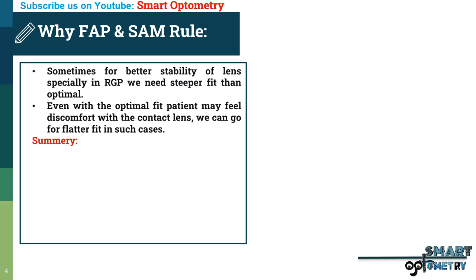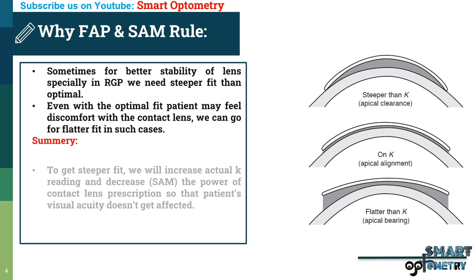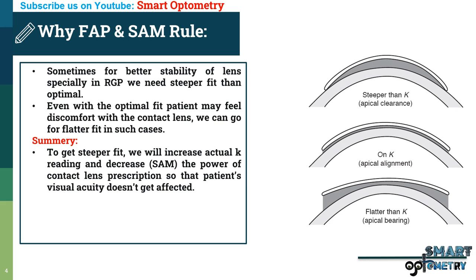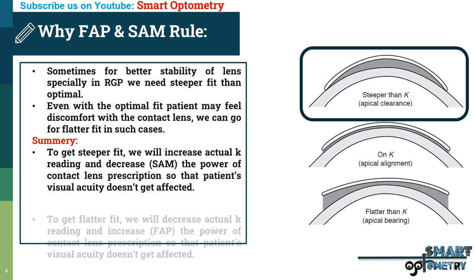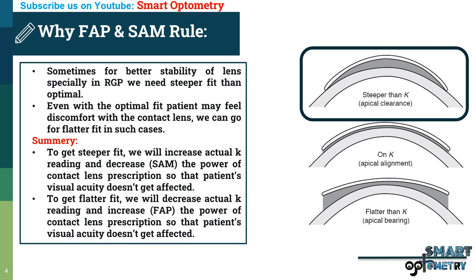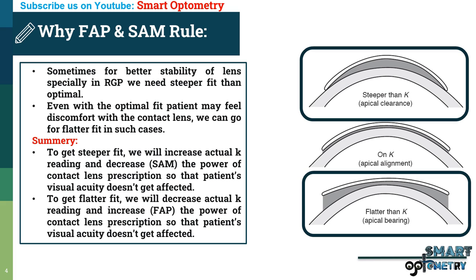The overall summary is: to get a steeper fit, we will increase the base curve reading and decrease the power of the contact lens prescription so that the patient's visual acuity doesn't get affected. And to get a flatter fit, we will decrease the base curve reading and increase the power of the contact lens prescription so that the patient's visual acuity doesn't get affected.